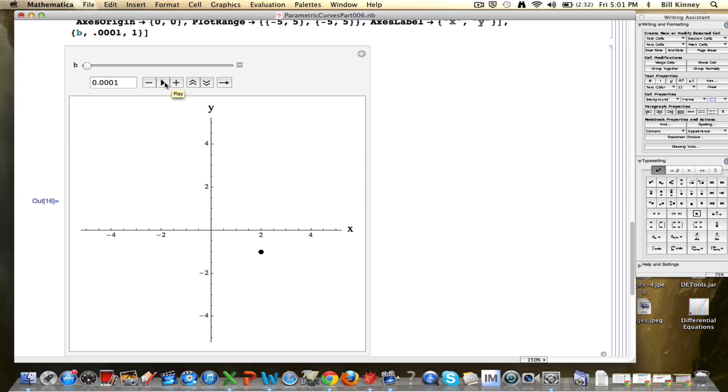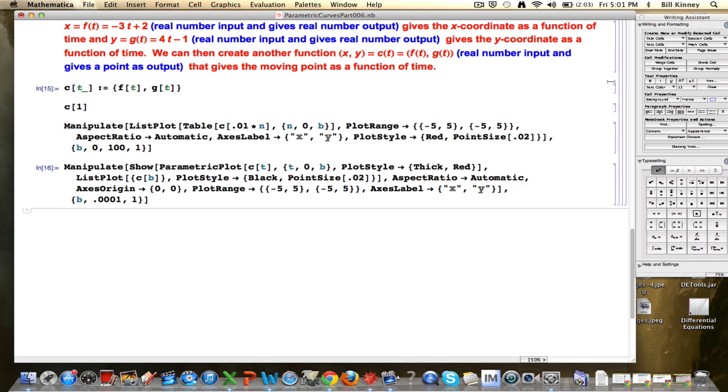And we saw the motion happening. The dot is where the person is as time goes by. And the red line is where the person has traveled. You can see time going by with this slider marked with a B. So that was the motion, and we used linear functions to do that.